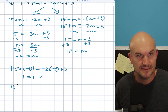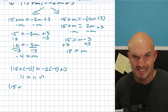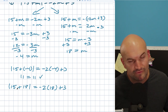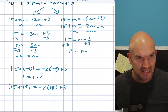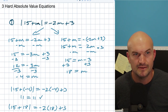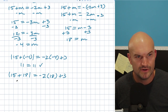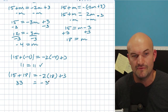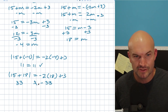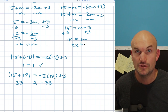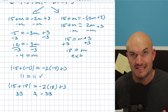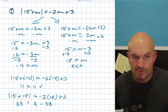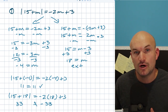Now let's check m equals 18. Absolute value of 15 plus 18 equals absolute value of 33, which is 33. And negative 2 times 18 is negative 36, plus 3 equals negative 33. You can see that doesn't work — 33 is not equal to negative 33. So therefore this is what we call an extraneous solution. M equals 18 satisfied the simplified equation but does not satisfy the original equation. That's why we call it an extraneous solution.